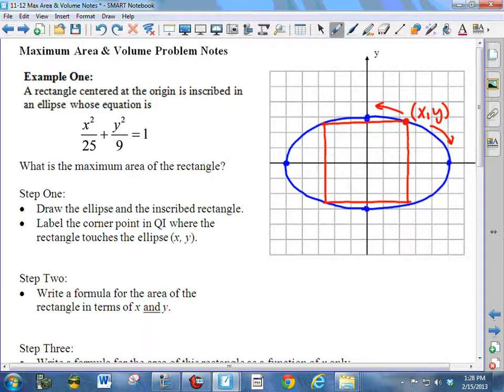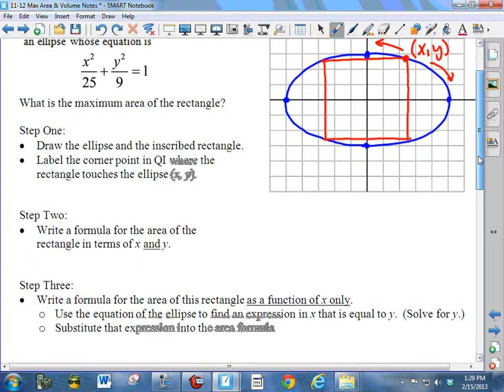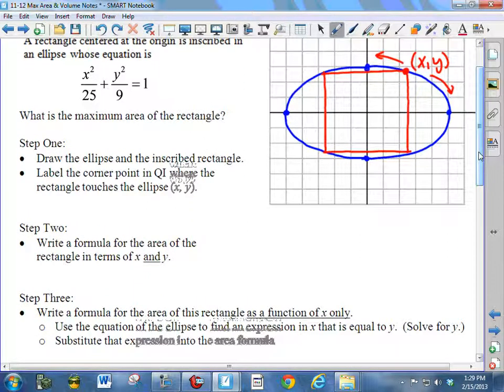So we've actually done step one. We've drawn the ellipse, the inscribed rectangle. We've labeled the corner point where the rectangle touches the ellipse as XY. Recognize that the point XY is on both the rectangle and the ellipse.